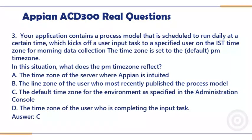Question 3. Your application contains a process model that is scheduled to run daily at a certain time, which kicks off a user input task to a specified user on the East time zone for morning data collection. The time zone is set to the default PM time zone. In this situation, what does the PM time zone reflect? a. The time zone of the server where Appian is installed. b. The time zone of the user who most recently published the process model. c. The default time zone for the environment as specified in the administration console. d. The time zone of the user who is completing the input task.